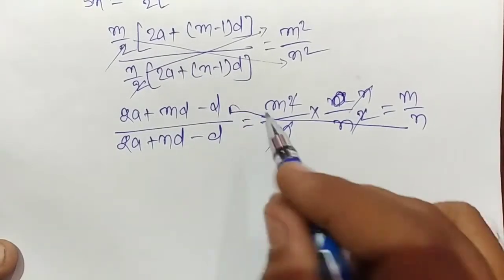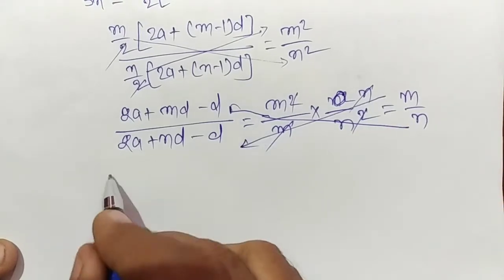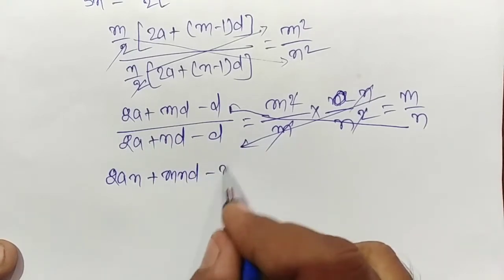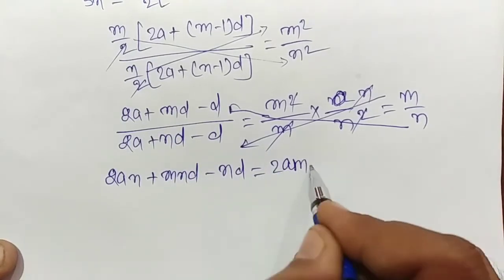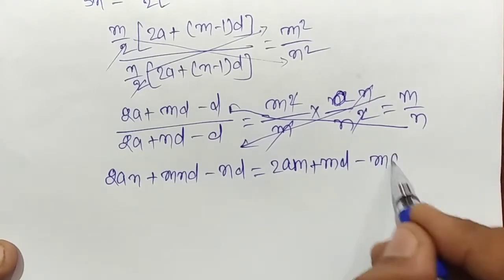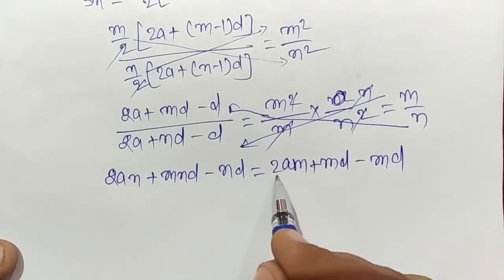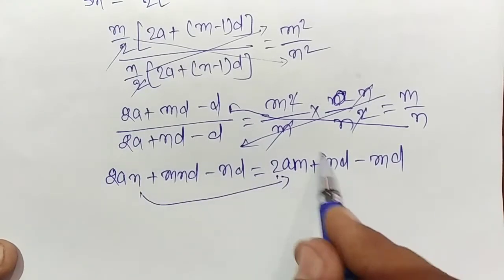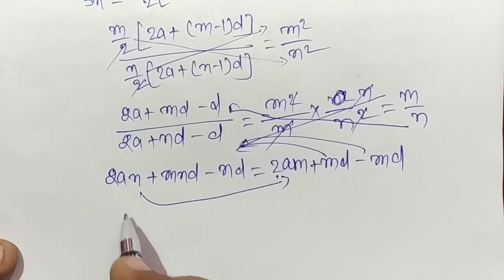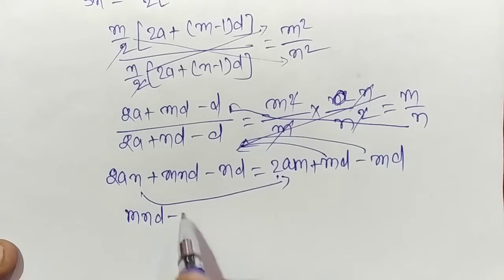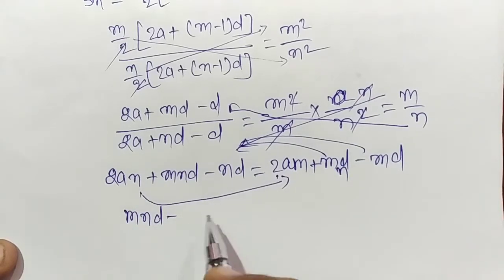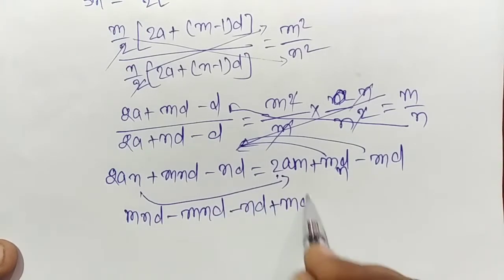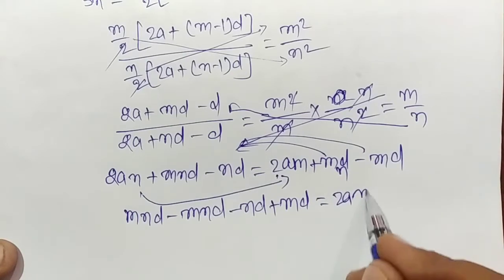Again doing cross multiplication, we get: 2an + mnd - nd = 2am + mnd - md. Now we will transfer terms to respective sides.